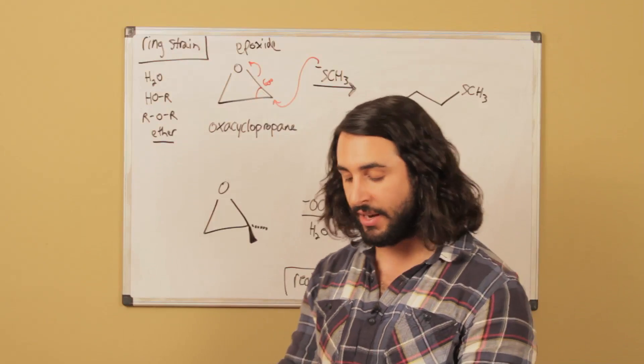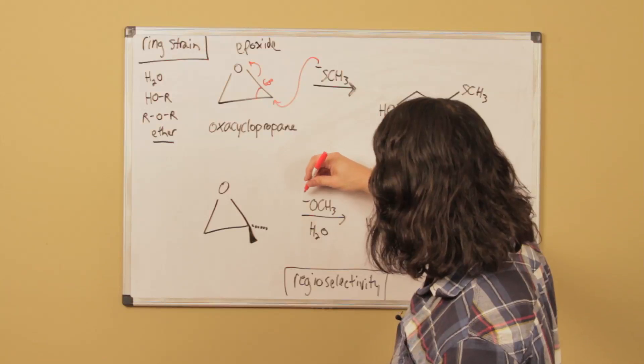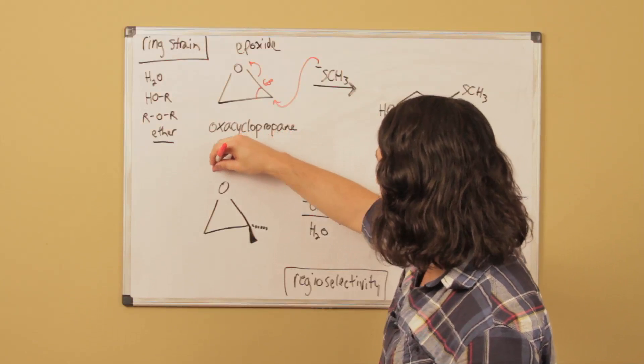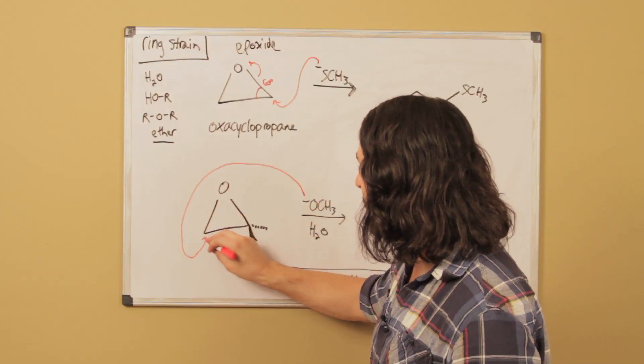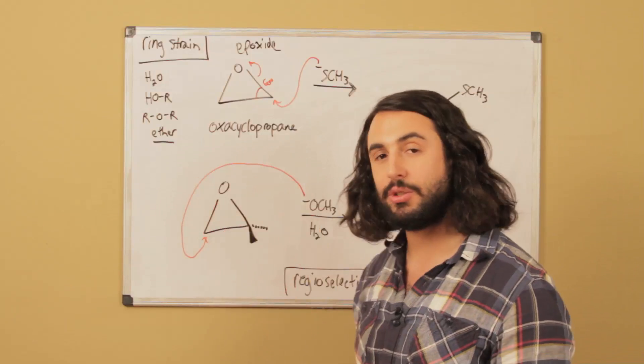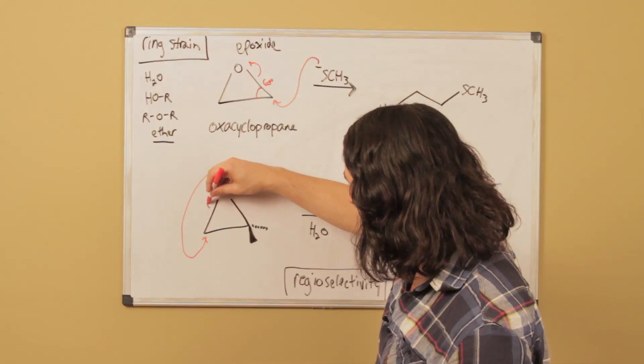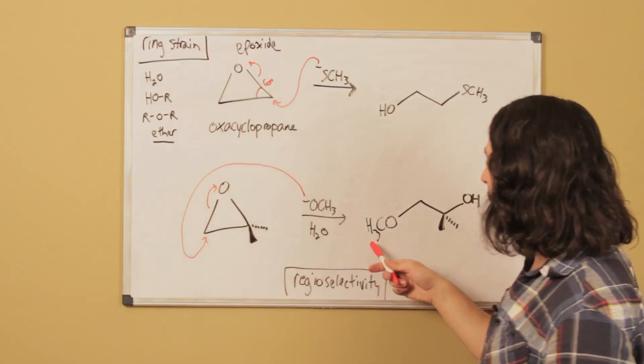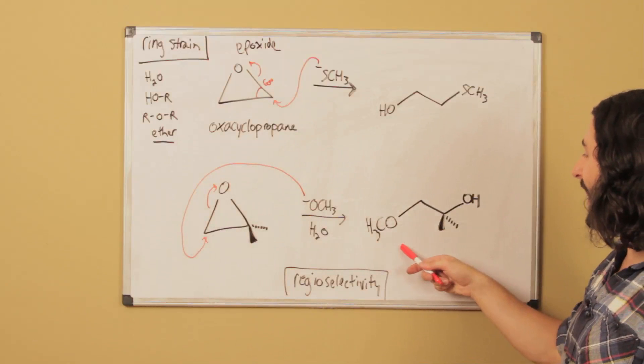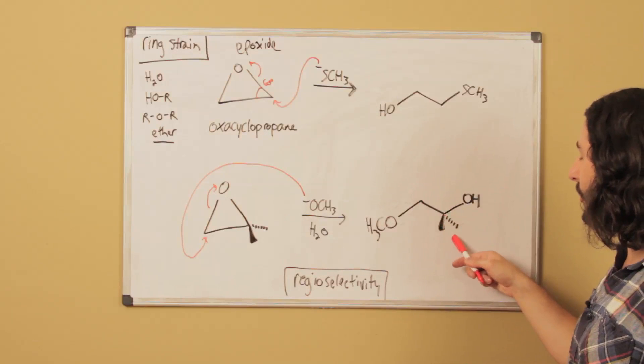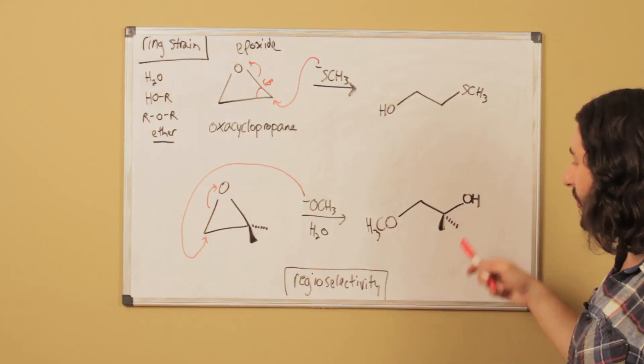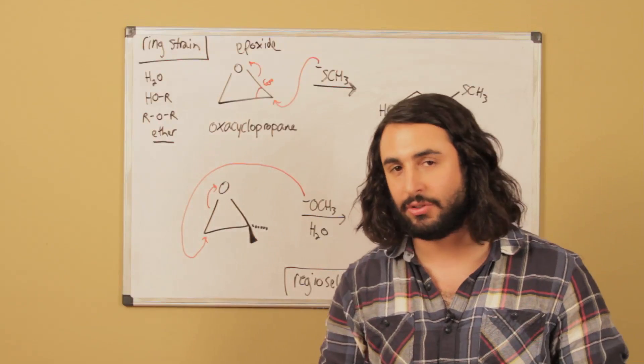The thing is this has two methyl groups on it, this doesn't have any alkyl on it. From a sterics standpoint it's a very easy choice. This is going to go all the way over here, it's going to attack on that carbon because it's much more sterically available. It's going to pop this epoxide open and we've got our methoxy group that attacked, here's our two methyl groups, and then there's the hydroxyl once it picks up a proton.